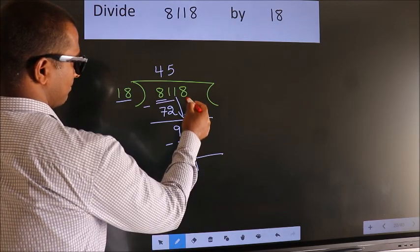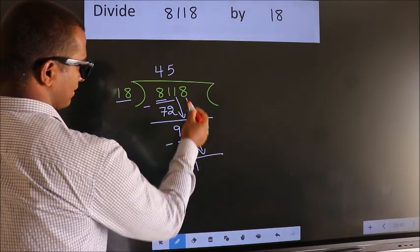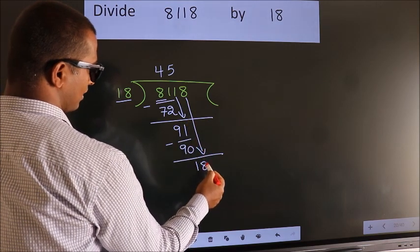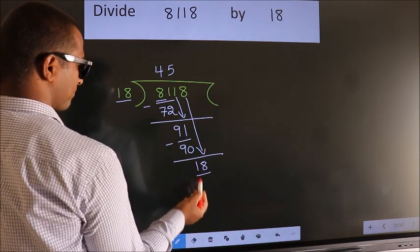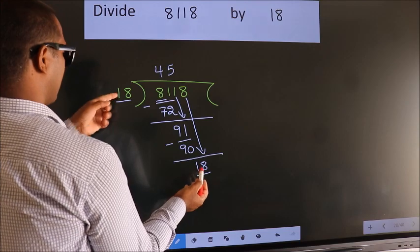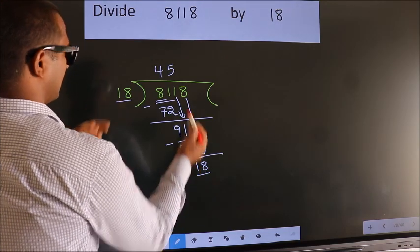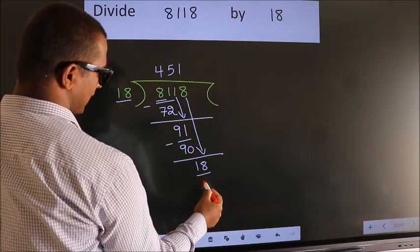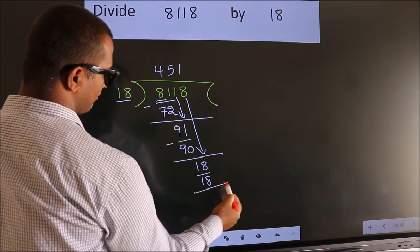After this, bring down the beside number. So 8 down. So 18. When do we get 18? In 18 table. 18 once, 18. Now we subtract.